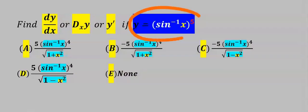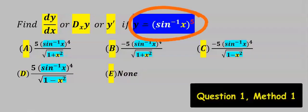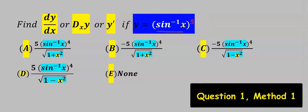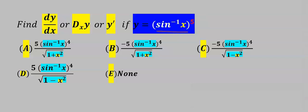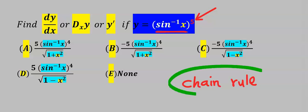Find the derivative of this function. Observe this is sine inverse of x, however at the top the sine inverse of x is raised to the power of 5. To differentiate this function we are going to apply chain rule.